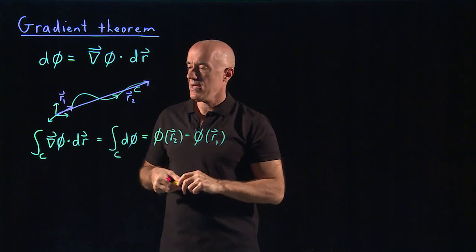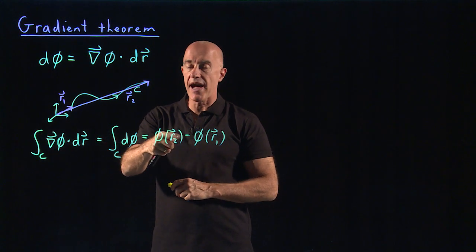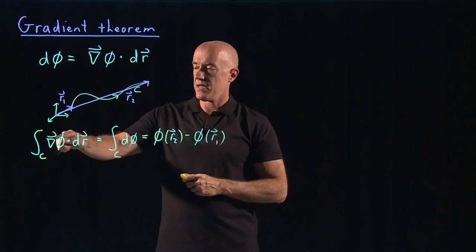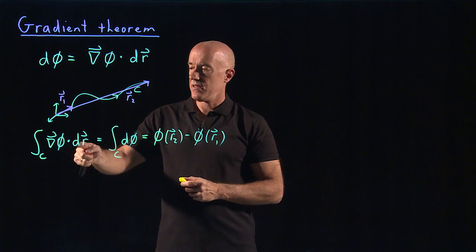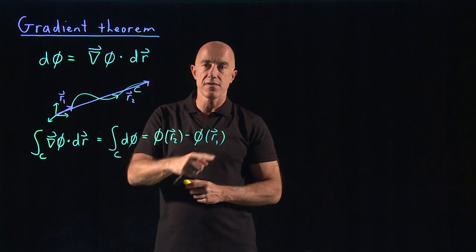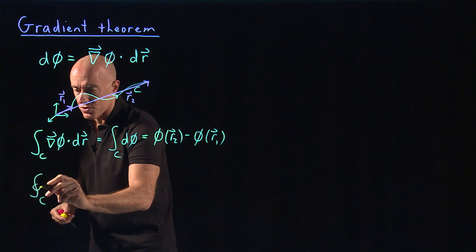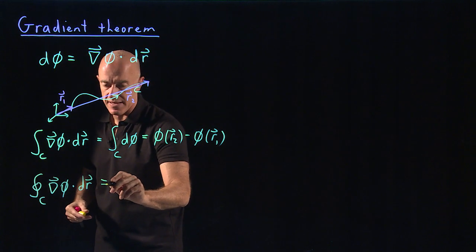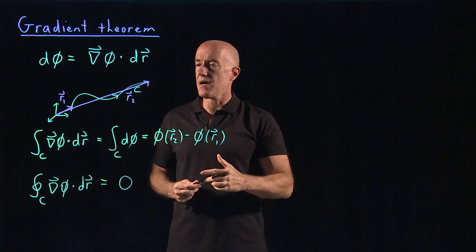This is a fundamental theorem in that it tells us we can do this line integral of a gradient of a function dot dr by just knowing the value of the function itself at the end points of the curve — just like the fundamental theorem of single variable calculus, except now we're in more than one dimension. There's an important consequence of this: the integral of del phi dot dr along a curve depends only on the value of phi at the end points of the curve. So if the end points are at the same point in space — in other words, we're integrating over a closed curve of del phi dot dr — then the difference in phi at the starting point and the end point will be zero, because the starting point and the end point are the same.